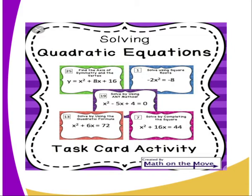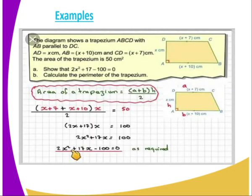Now let us look at another example. This is a real-life situation. We have a diagram given and you are required to show that 2x² + 17x − 100 = 0. That is a quadratic equation. So we need to form a quadratic equation from the diagram.